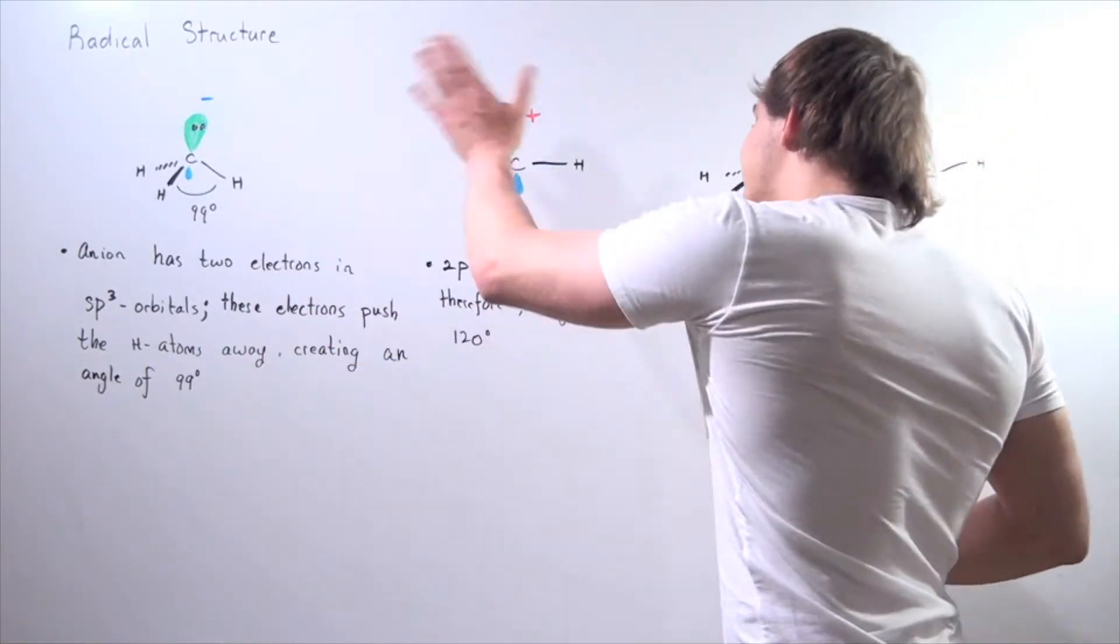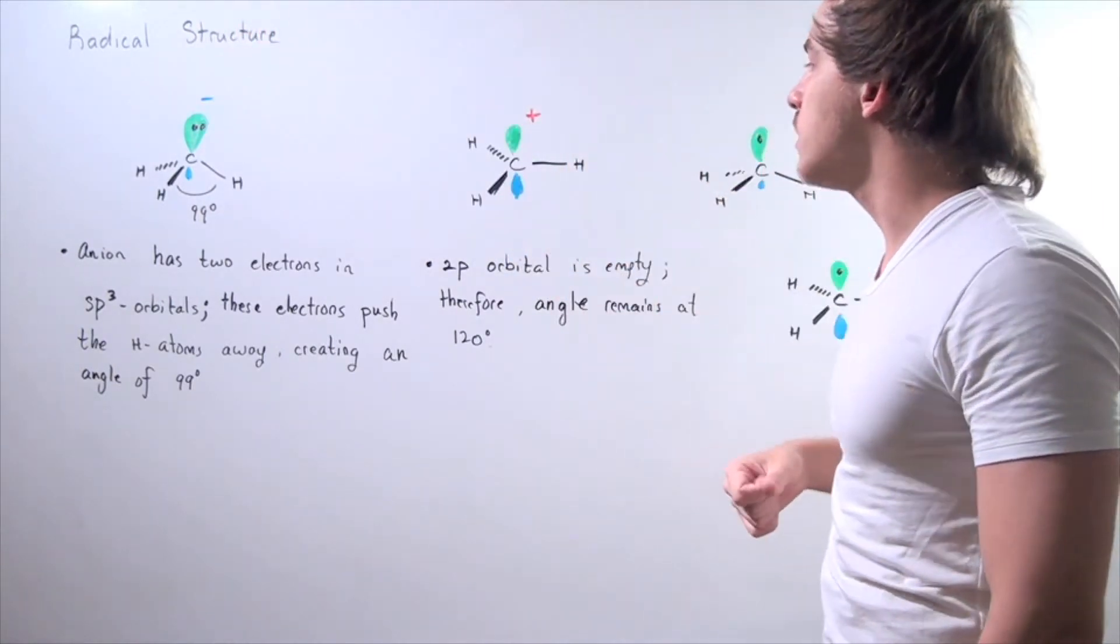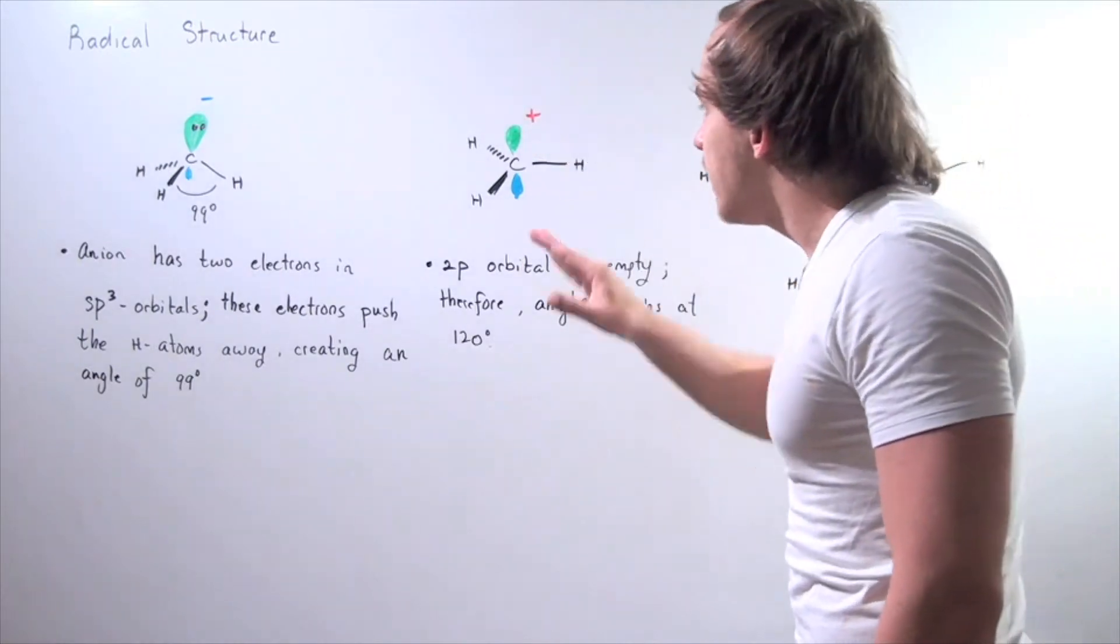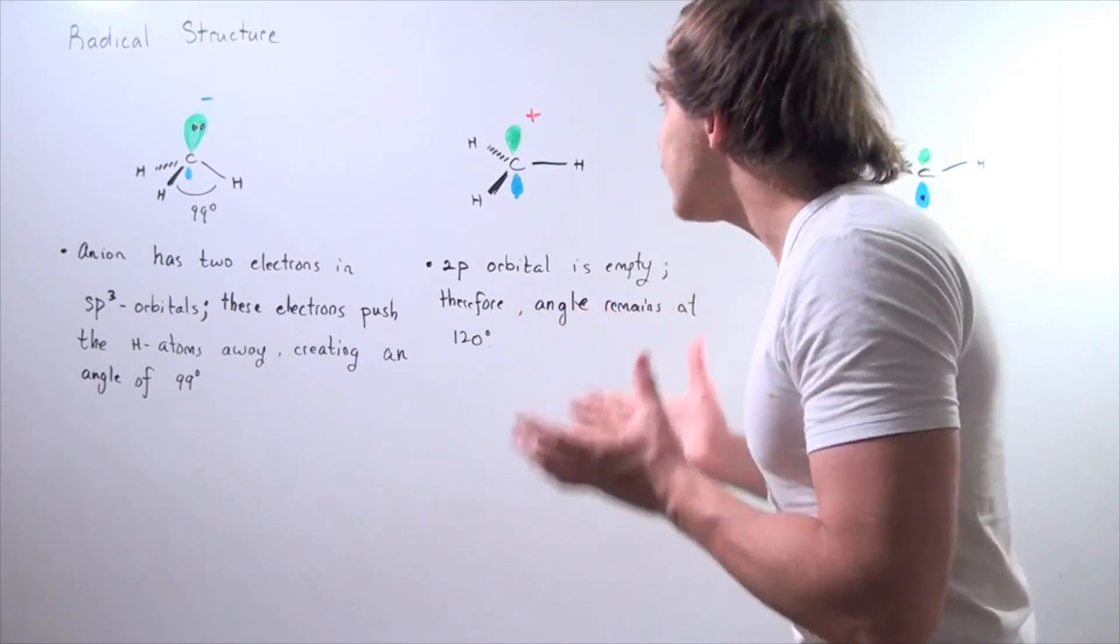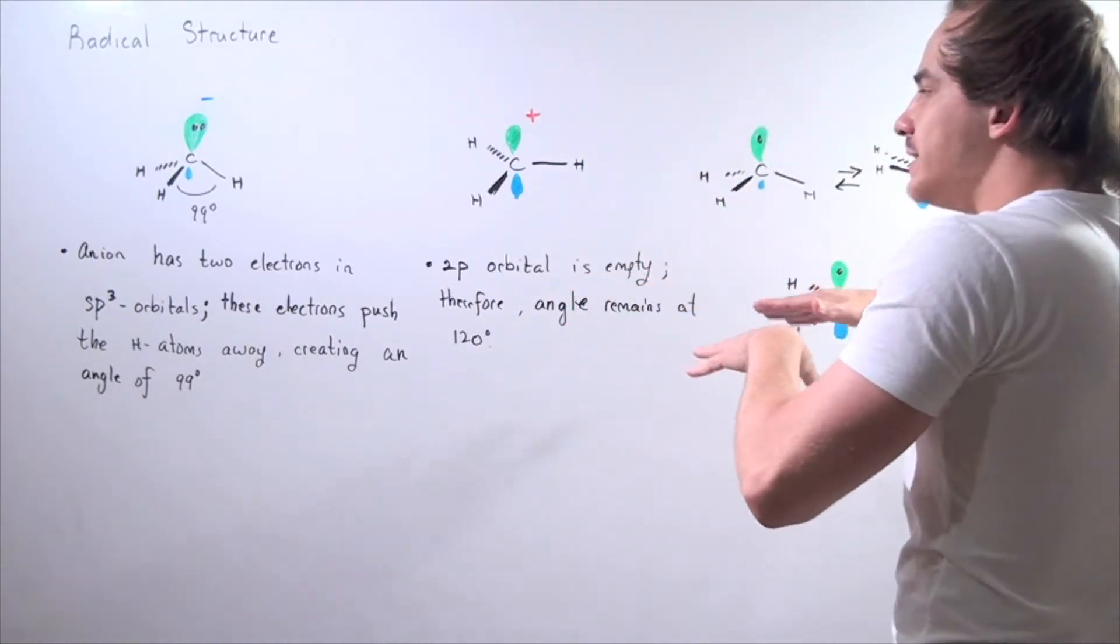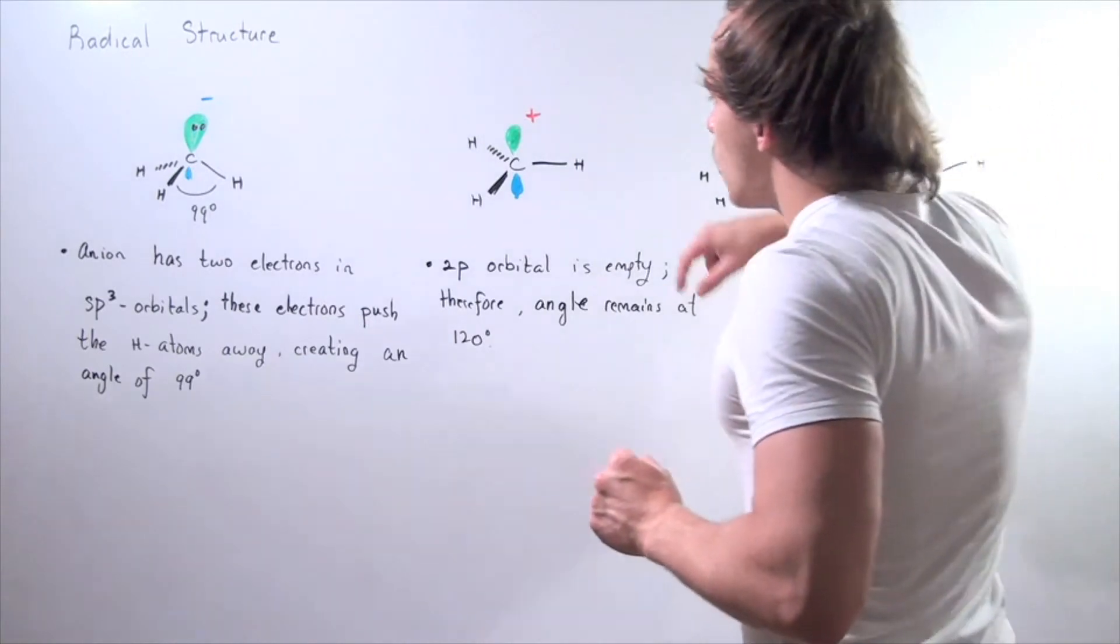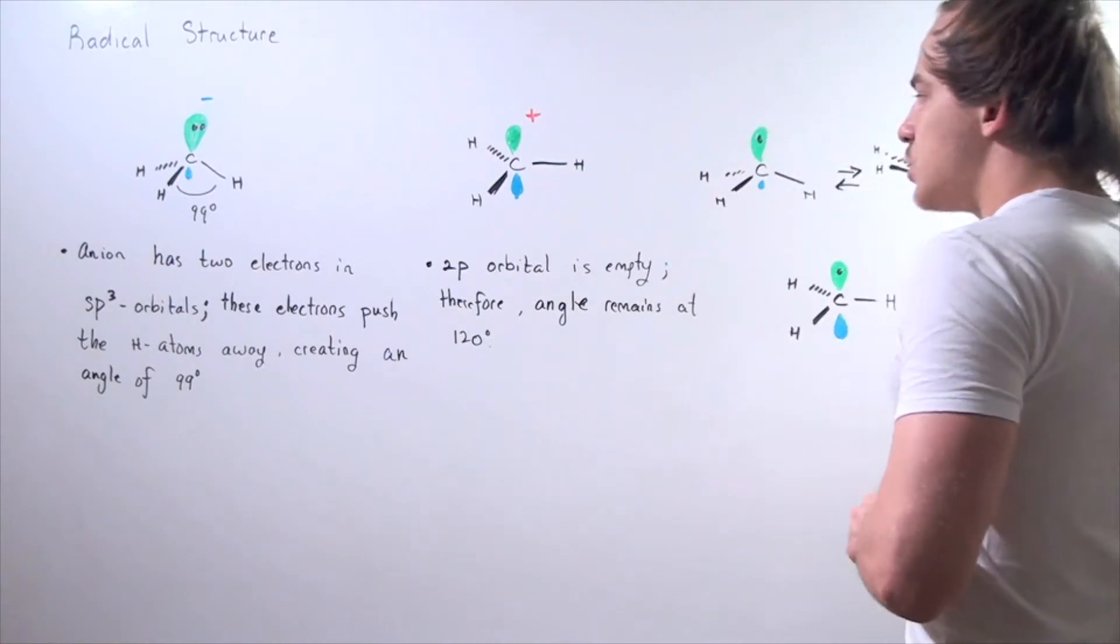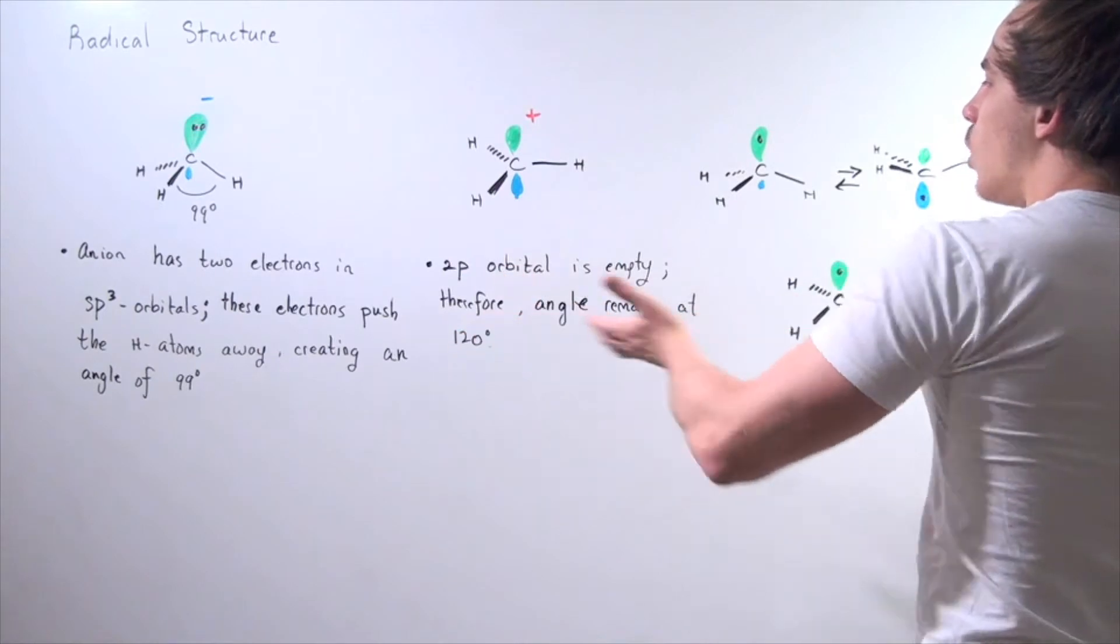Now let's look at a different picture. If we take these two electrons away from the orbital, we form an empty 2p orbital. Because this orbital is completely vacant, there are no electrons to push the H atoms. So these H atoms will be aligned along the XY plane, and the angle will be 120 degrees between the H-carbon-H bonds.